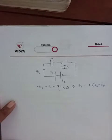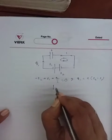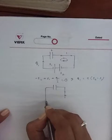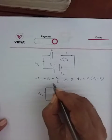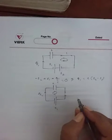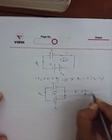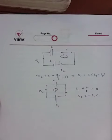Now switch 1 is taken away to position 2. The corresponding figure is like this: here is switch 2, and the cell is E1. Q2 is the amount of charge and C is the capacity. Applying Kirchhoff's loop again: Q2/C plus E1 equals 0, so Q2 equals minus C times E1.